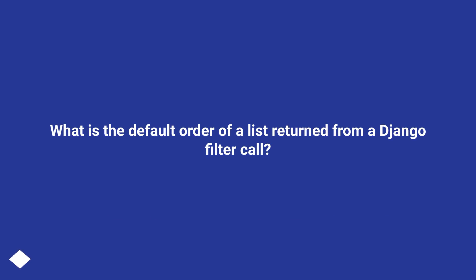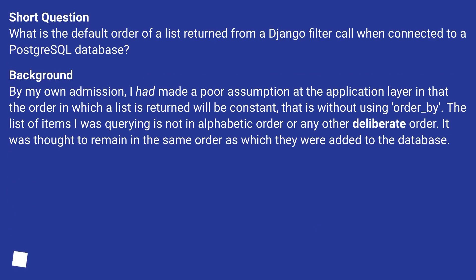What is the default order of a list returned from a Django filter call when connected to a PostgreSQL database?